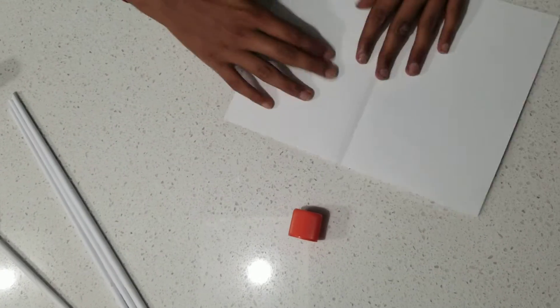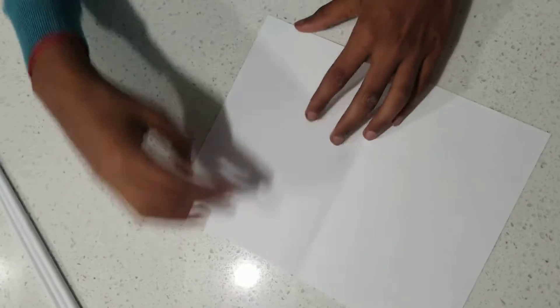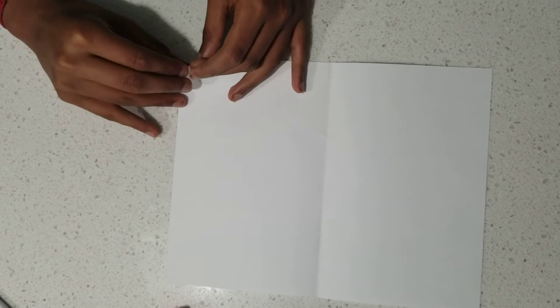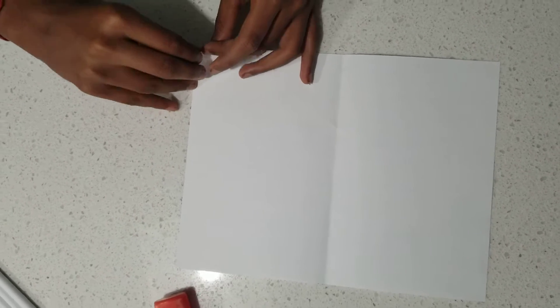So, we will take this piece of paper that I used in an example and start rolling it from this corner. Try to make your rolls as compact as possible.